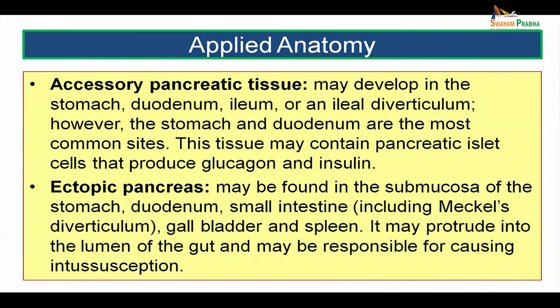Accessory pancreatic tissue may develop in the stomach, duodenum, ileum, or an ileal diverticulum, with the stomach and duodenum being the most common sites. This tissue may contain pancreatic islet cells that can produce glucagon and insulin. Ectopic pancreas may be found in the submucosa of the stomach, duodenum, small intestine including Meckel's diverticulum, gallbladder, and spleen. When present, it may protrude into the lumen of the gut tube and may be responsible for causing intussusception.